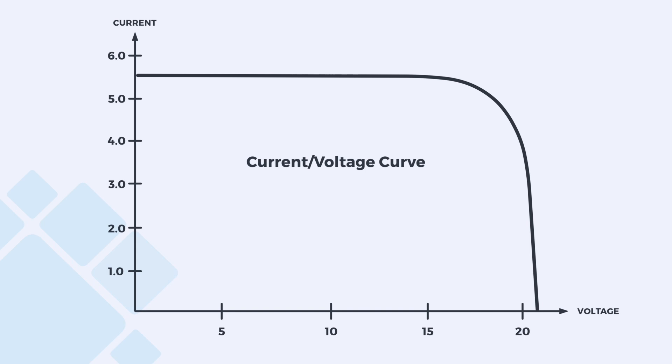The black line shows the output of a panel in ideal conditions. Current stays nearly the same as voltage increases, until a rapid drop-off where the solar cell can no longer produce any current.